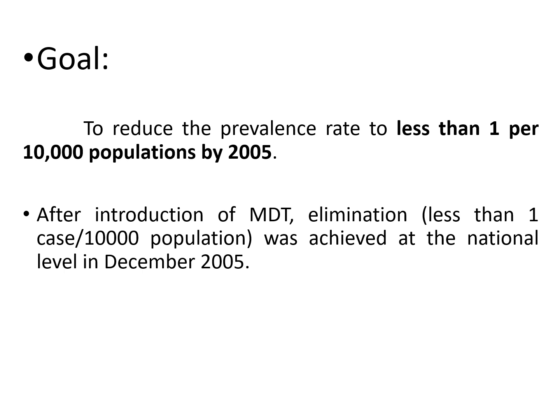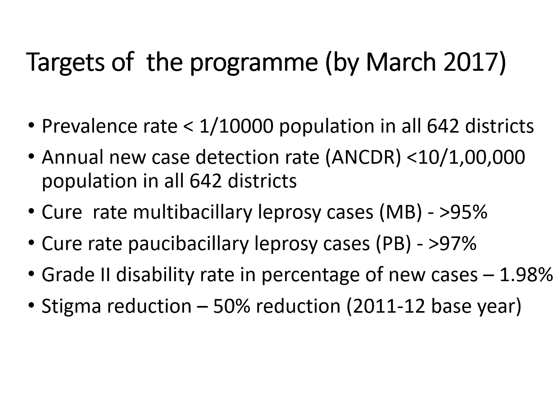The targets of the program to be achieved by March 2017: First, prevalence rate less than 1 per 10,000 population in all 642 districts across India. Second, annual new case detection rate less than 10 per 1,000 population in all districts. Third, cure rate for MB (multibacillary) cases to be more than 95%, and cure rate for PB (paucibacillary) cases to be more than 97%.